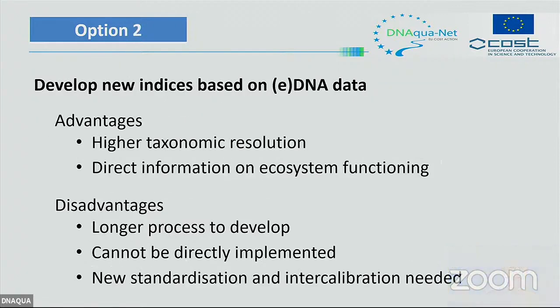For option two, we will need to develop fully new indices based on eDNA data. This has the advantages of higher taxonomic resolution and getting closer to information on ecosystem functioning. However, it's a longer process to develop and cannot be directly implemented. It will need new standardization and intercalibration because boundaries for quality status will likely change.